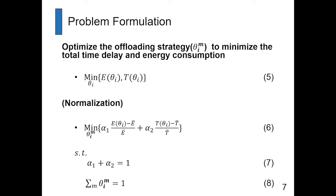After applying normalization, we can use formulations 6 through 8 to minimize total time delay and energy consumption. We use formulation 6 to evaluate our network environment in our research.